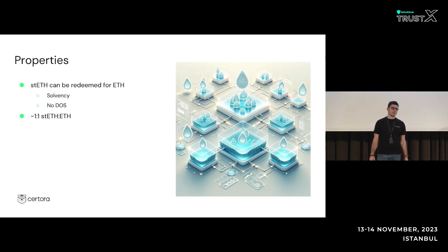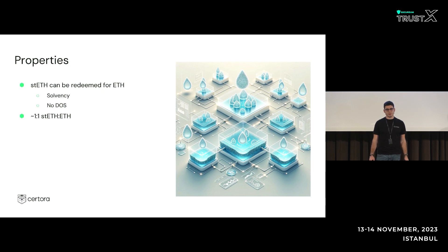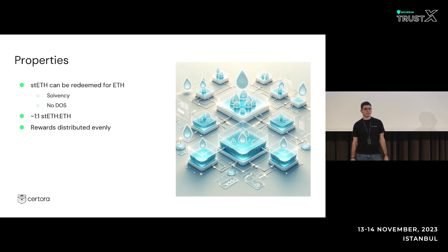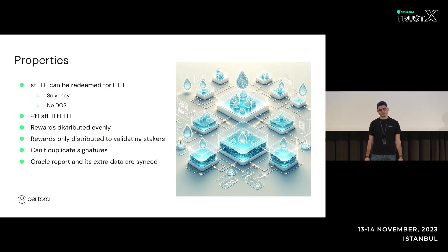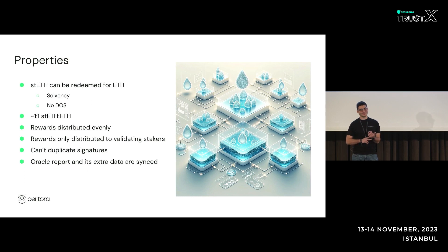You have another property that's maybe less easy to implement and a little abstract: you want stETH to be close to ETH. It's not necessarily always greater than, because you could go in and immediately get slashed, where the value would be less. So you can't really write a property that says the value of stETH is always greater than ETH, but something like that holds in the protocol. You also want it distributed evenly for all the people that have been participating in consensus the whole time, and distributed to only validating stakers. More specifically, you can't duplicate signatures - these are the properties you would hear about more if the person who did the verification of this project were here.